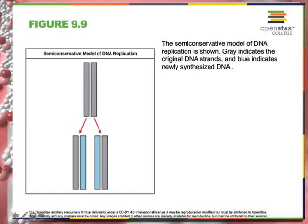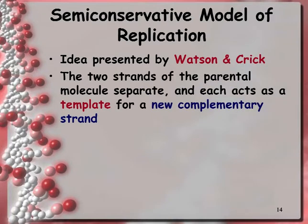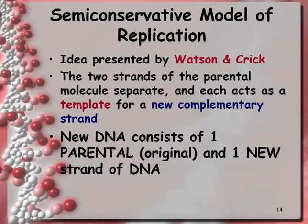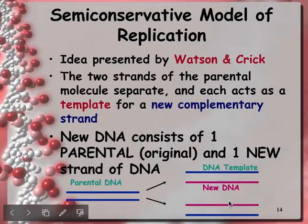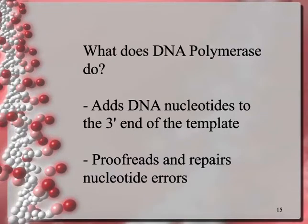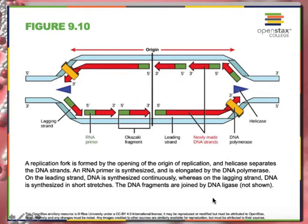In DNA replication in eukaryotes, DNA polymerase plays a key role. DNA polymerase adds DNA nucleotides to the three-prime end of the template strand, and it also repairs mistakes. Here's a picture to go over this.